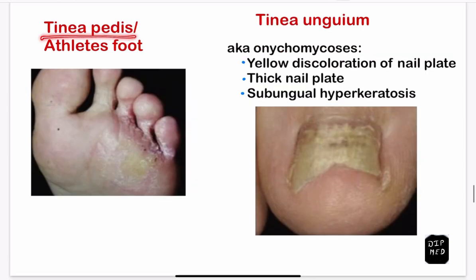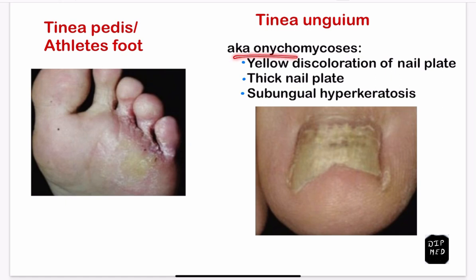Tinea pedis, also known as athlete's foot, is usually present between the interdigital space of the third and fourth toe. Tinea unguium, also known as onychomycosis, is characterized by yellow discoloration of the nail plate, thickened nail plate, and subungual hyperkeratosis.